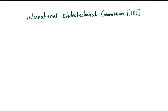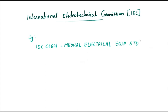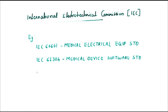Now we'll see some of the standards under the International Electro-Technical Commission, IEC. It's a non-government organization that prepares and publishes international standards for all electrical, electronic, and related technologies. The first one, IEC 60601, is a series of technical standards for the safety and effectiveness of medical electrical equipment. IEC 62304 is a medical device software standard focused on software lifecycle processes, used when the software itself is a medical device or an integral part of a medical device. Another example is IEC 62366, which covers the application of usability engineering to medical devices.